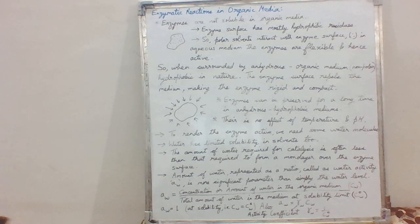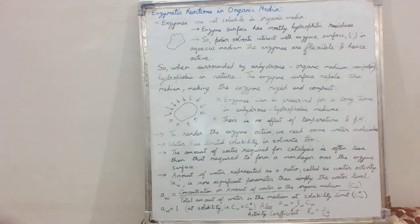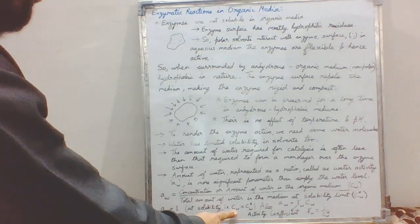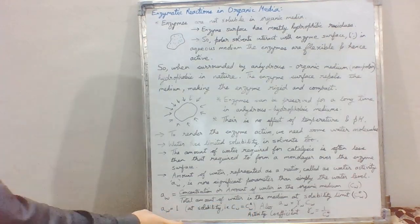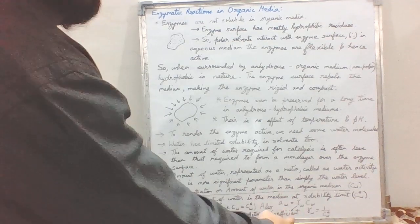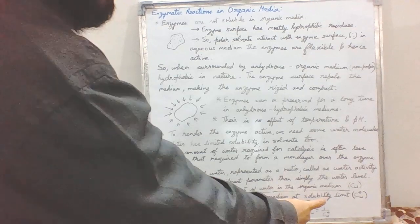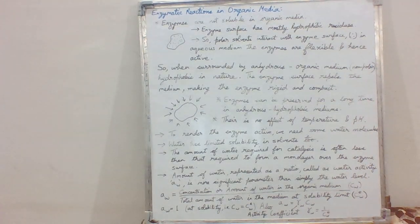Water activity was found to have a profound and significant effect on enzyme activity in organic medium. Water activity equals one at the solubility limit — that is, when the concentration of water equals the solubility of water in the organic solvent. It is also represented as: a_w = γ_w × c_w, where γ_w is the activity coefficient (the reciprocal of solubility of water in that solvent) and c_w is the concentration of water in the organic medium.